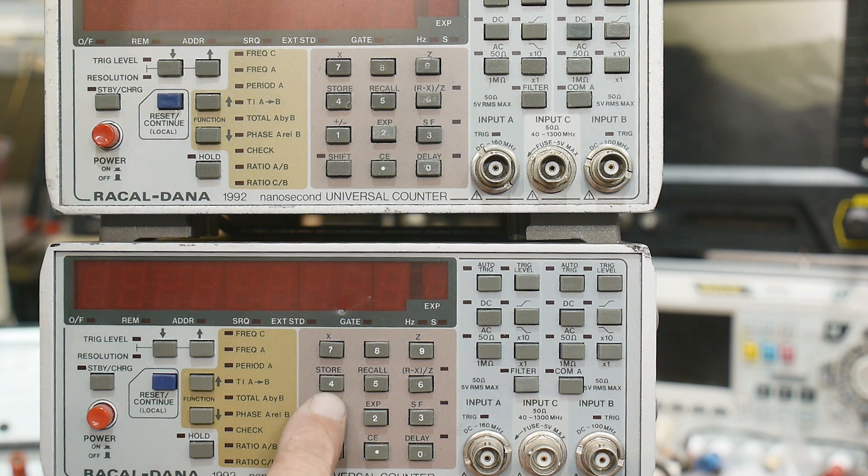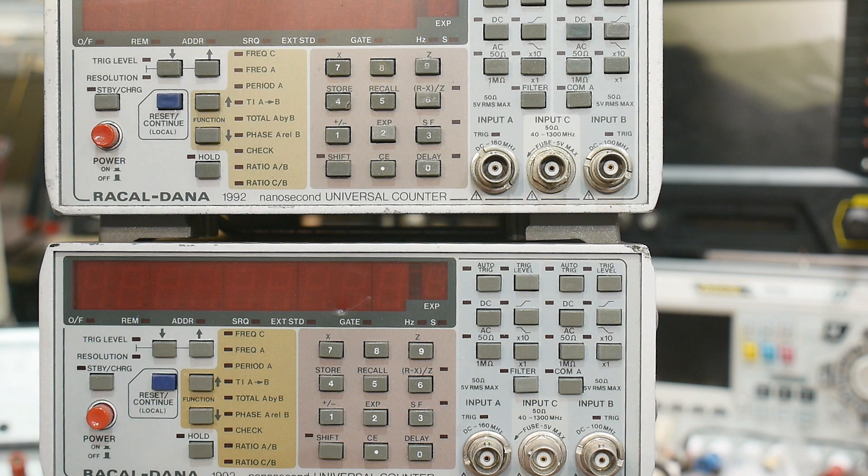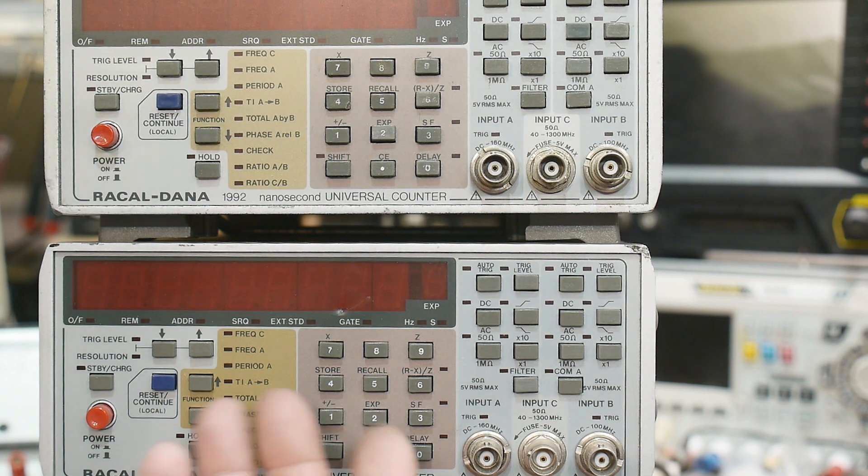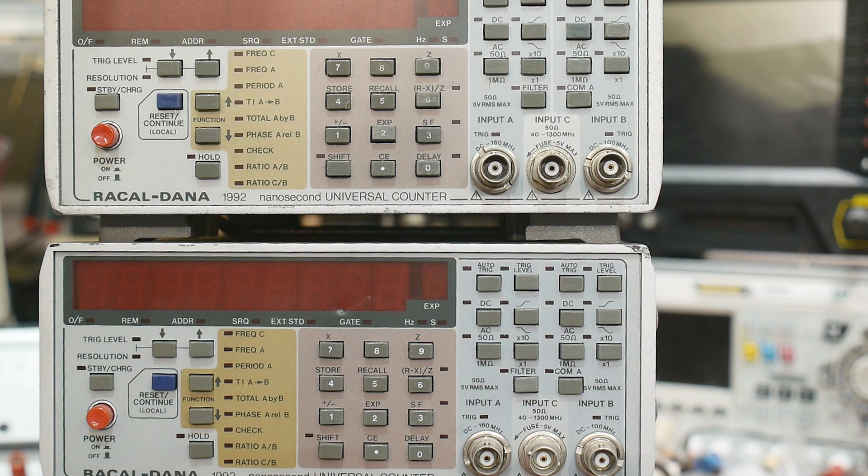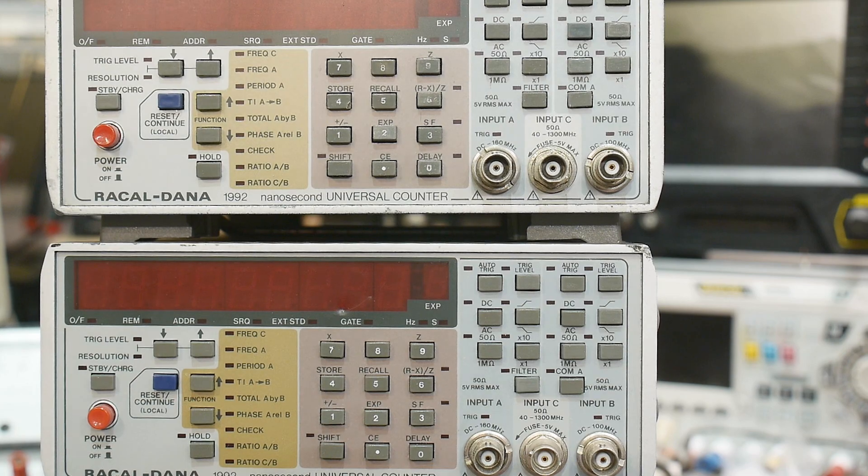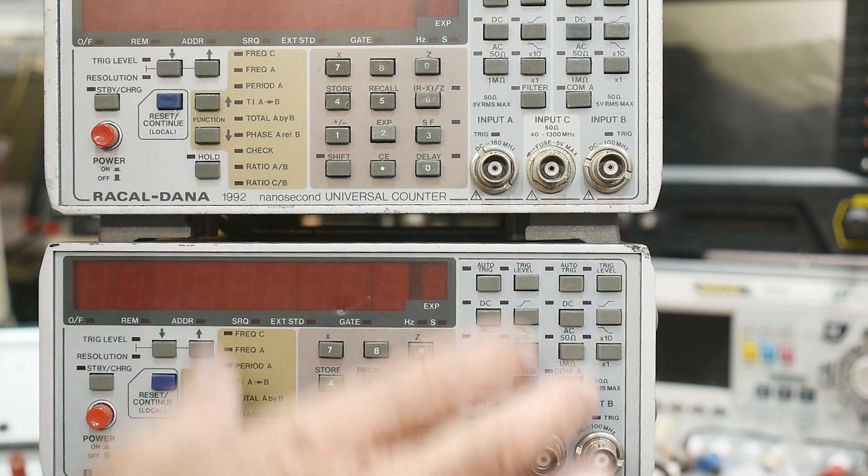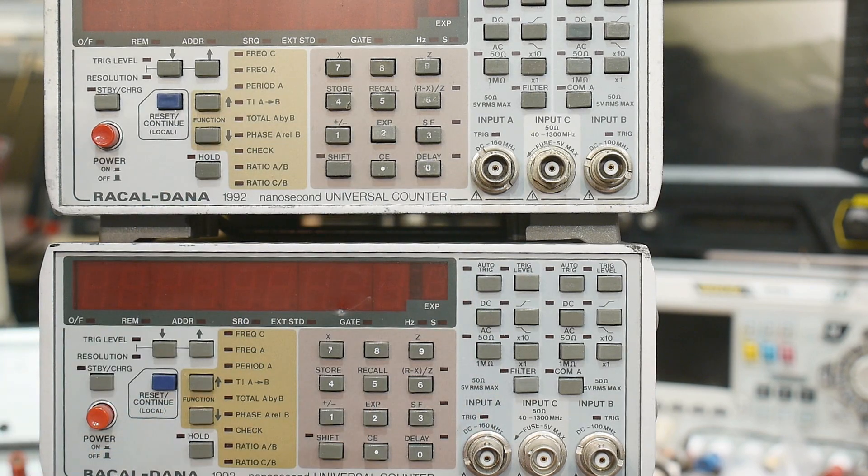It had the exact same problems of all Racal-Danas—the buttons just go bad on them. So I have replaced all of the buttons on this one and it works perfectly fine. I didn't film that because I've already done one of these, but now I have two of them and I can compare the jitter of the two.